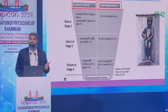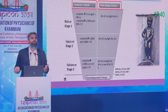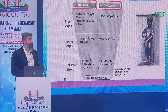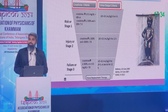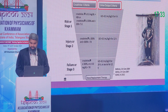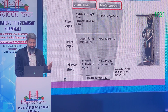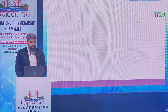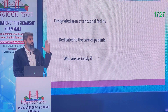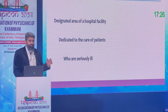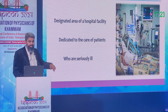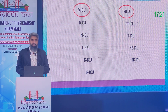Now we have a uniform KDIGO definition classifying AKI into stage one, two, and three. Stage one is a rise of more than 0.3 mg/dL creatinine in 48 hours, or a drop in urine output to less than 0.5 ml per kg per hour for six hours. These thresholds are what are used in the ICU setting.